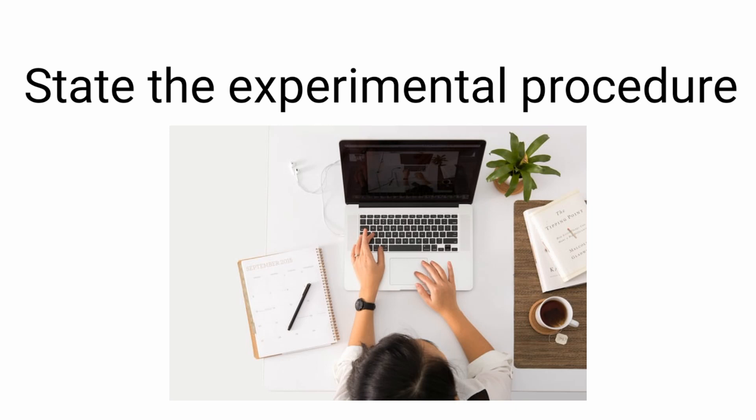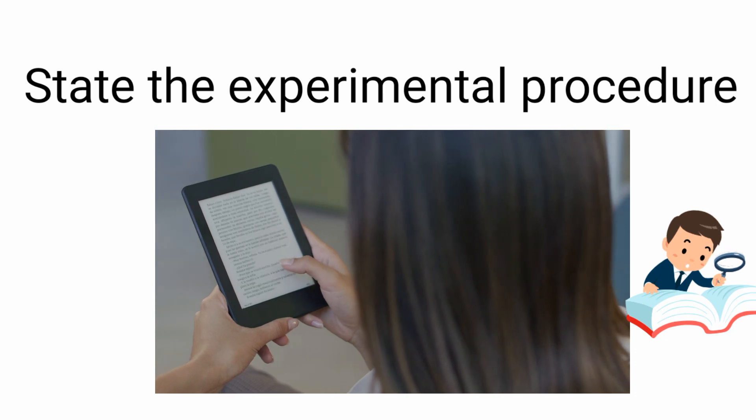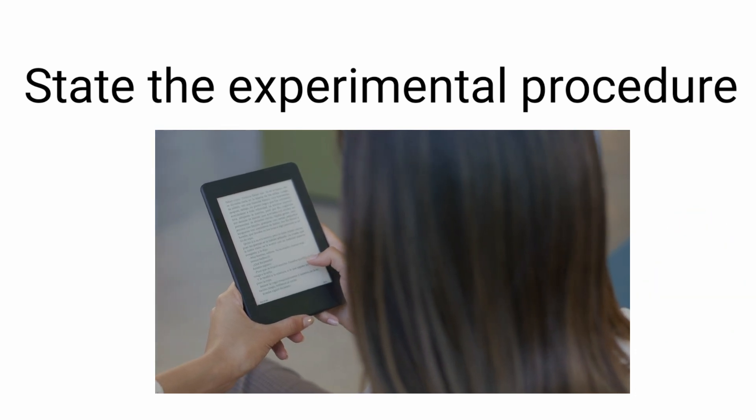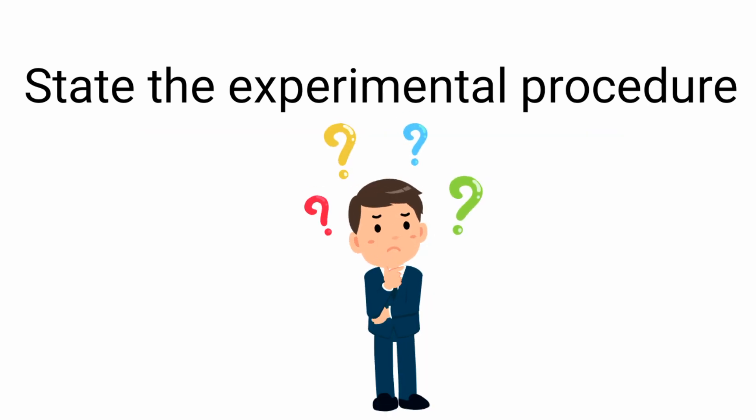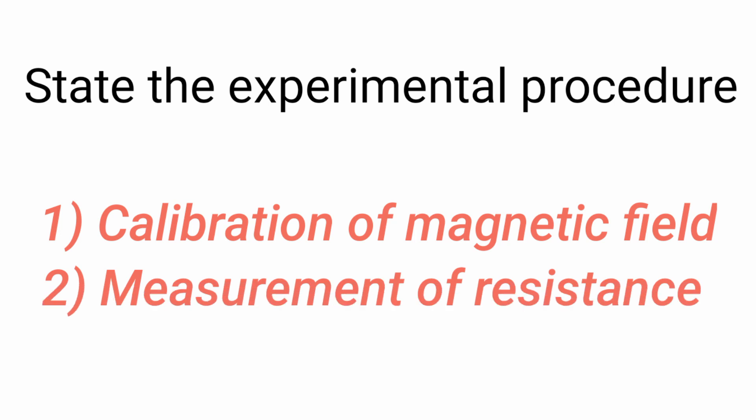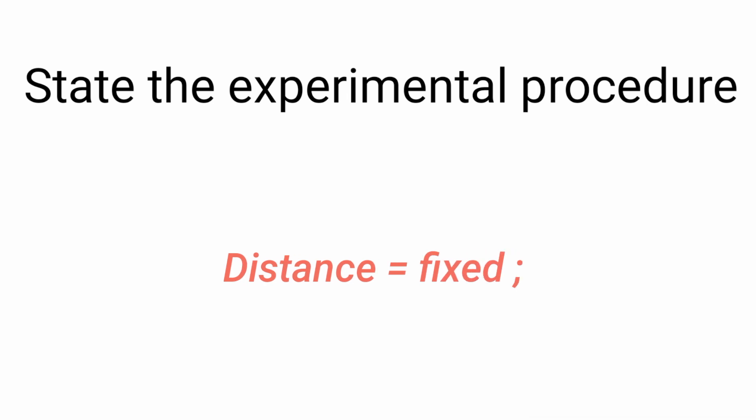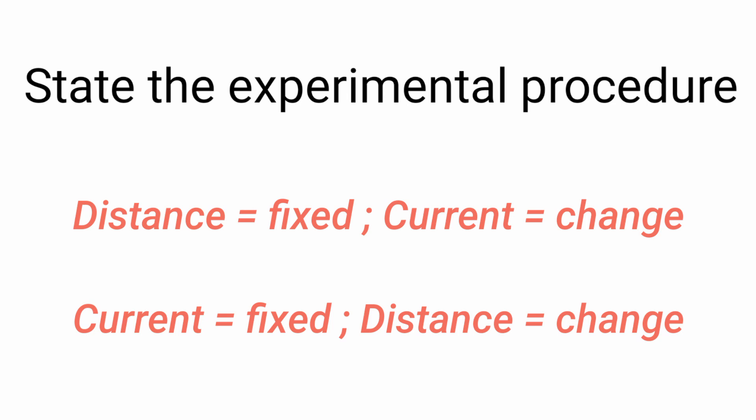State the experimental procedure. I saw few videos of this experiment and read few PDFs. The procedure was more or less the same but differed slightly. The experiment is basically divided into two parts: the first is calibration of magnetic field and the second is measurement of resistance. First we will keep the distance fixed and vary the current, then we will keep the current fixed and vary the distance.